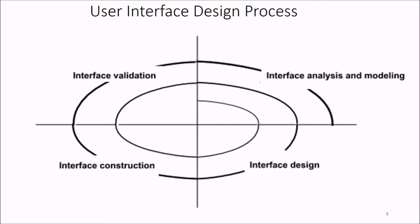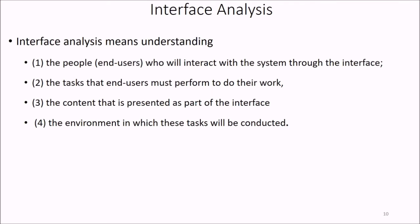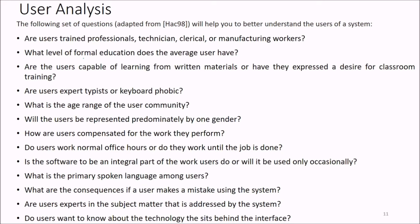The user interface design process is iterative. Iterative analysis and modeling is done first, then we design, then we construct, and then we validate the interface. Interface analysis means understanding — analyzing the people or end users who will interact with the system, the tasks they must perform, the content presented as part of the interface, and the environment in which tasks will be conducted.